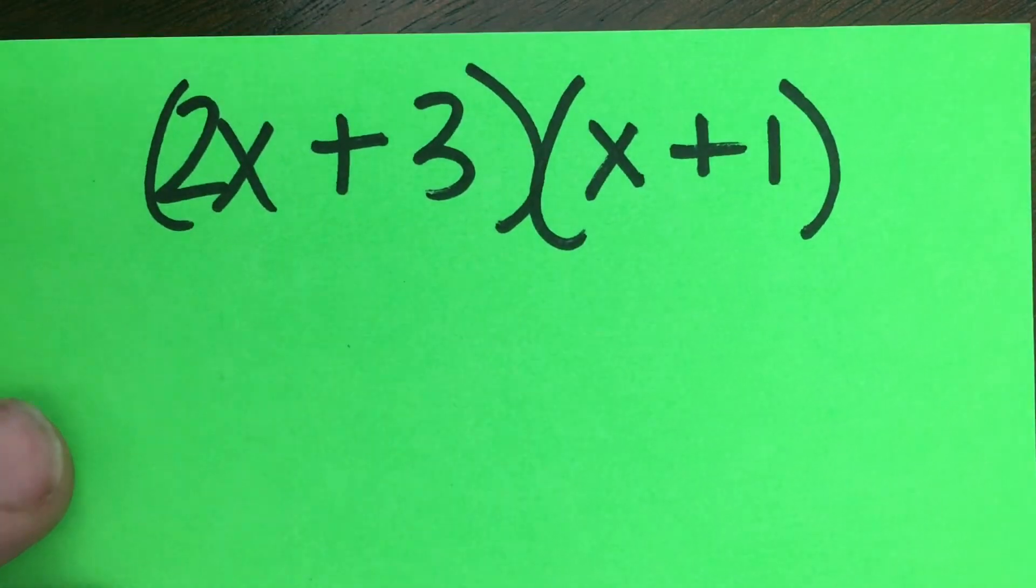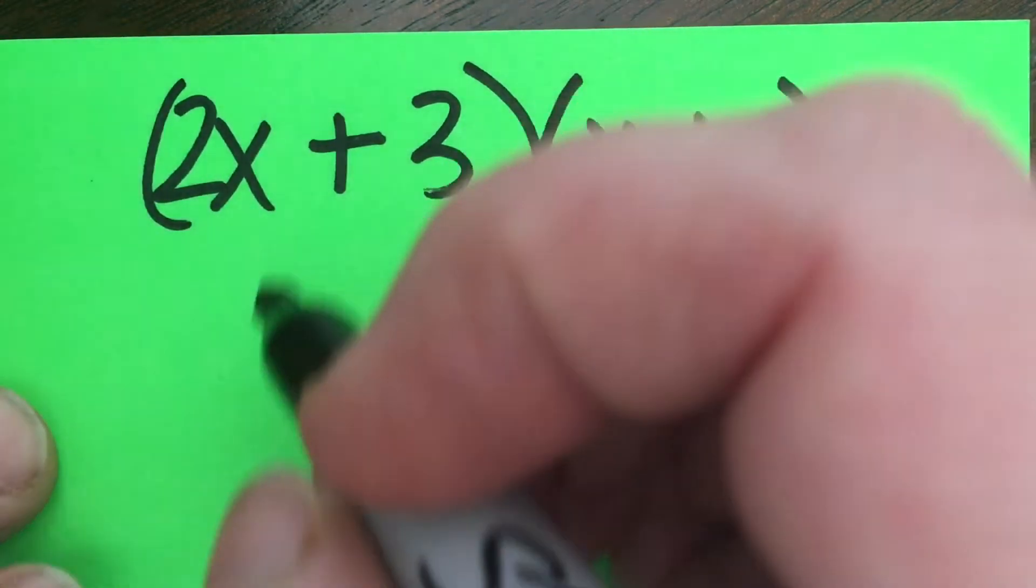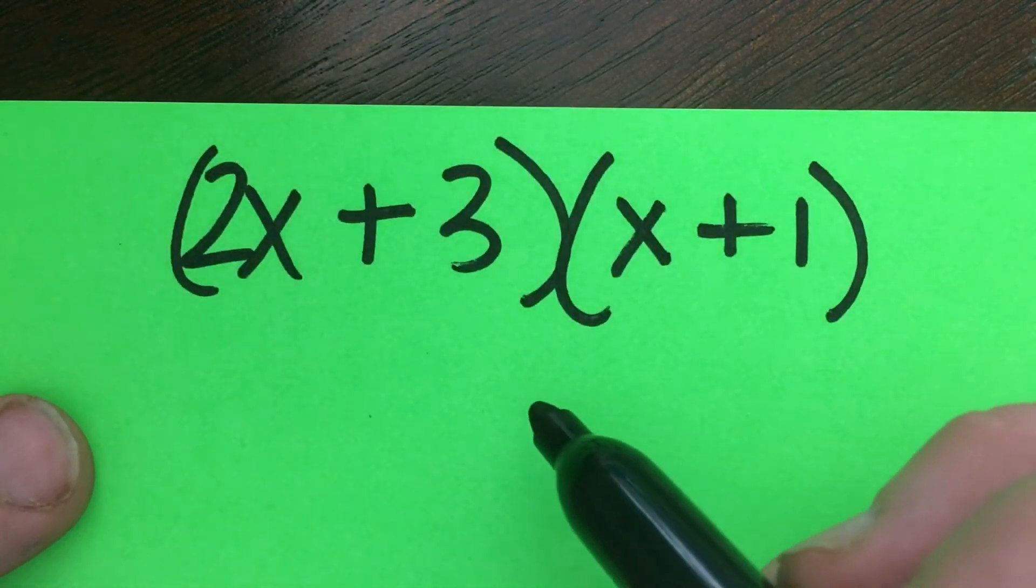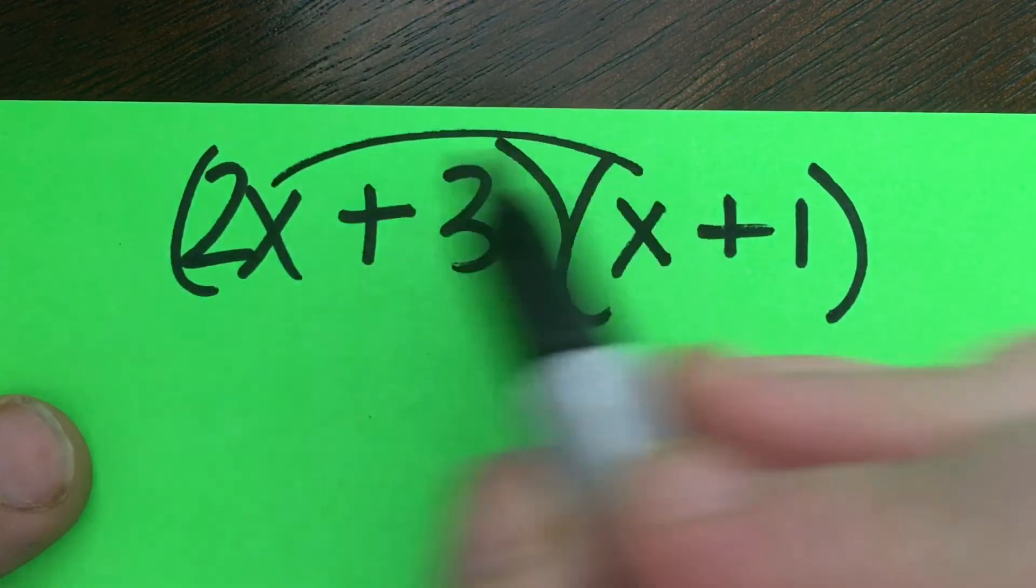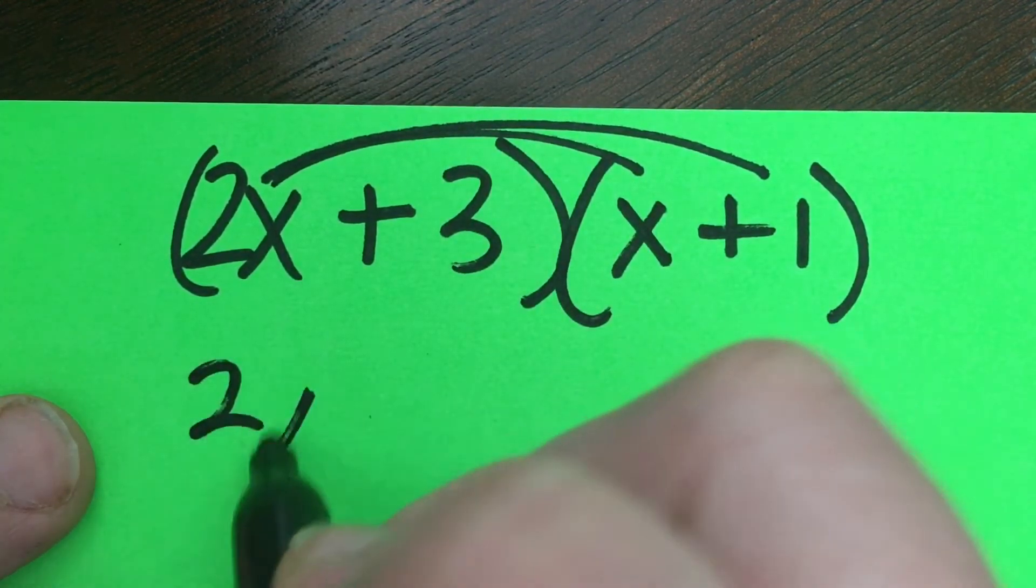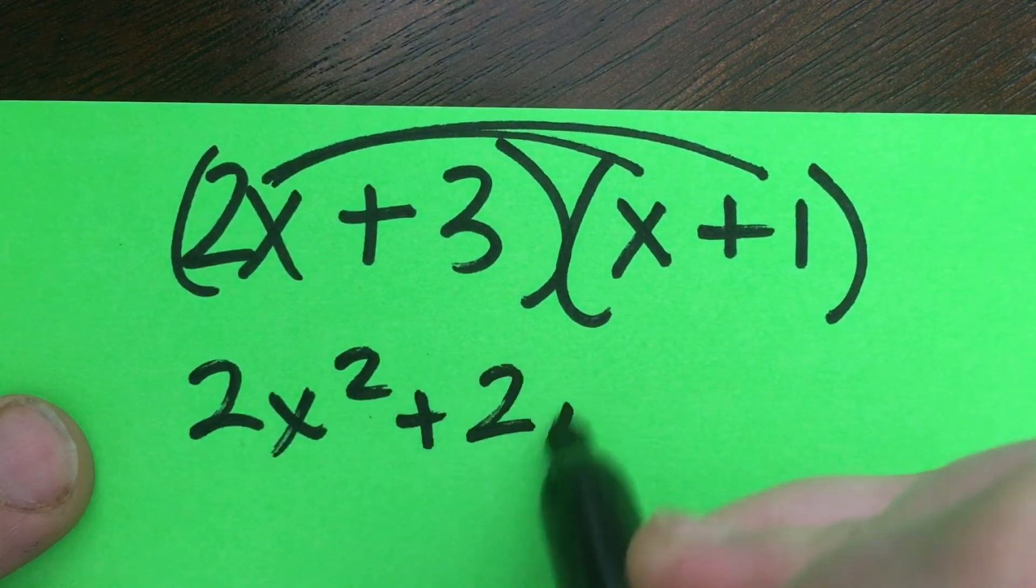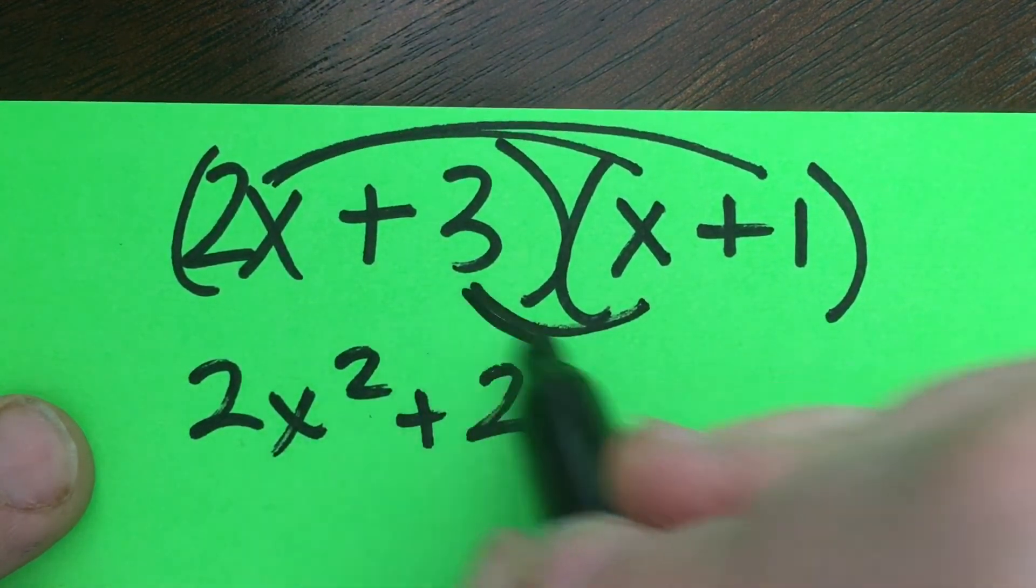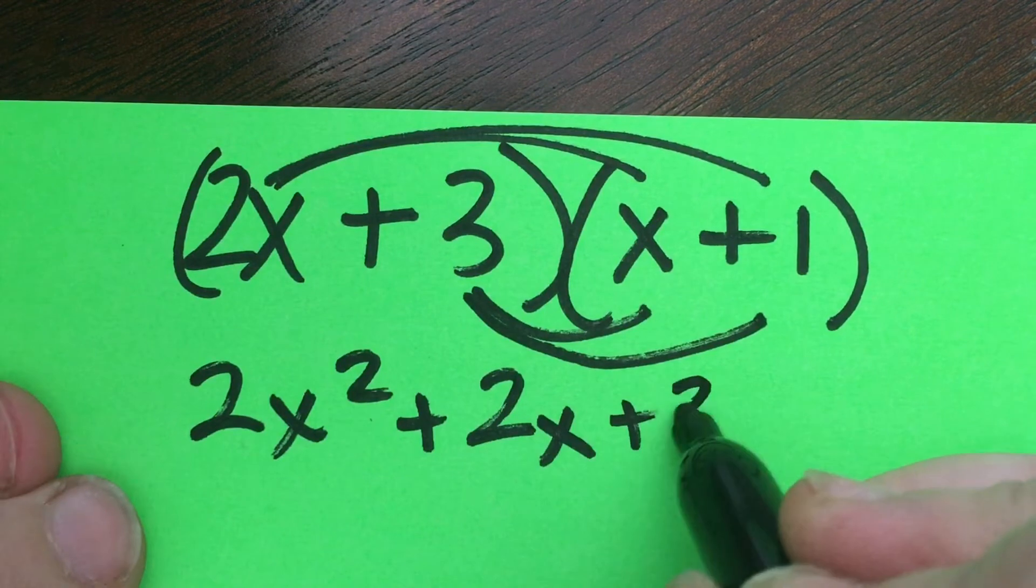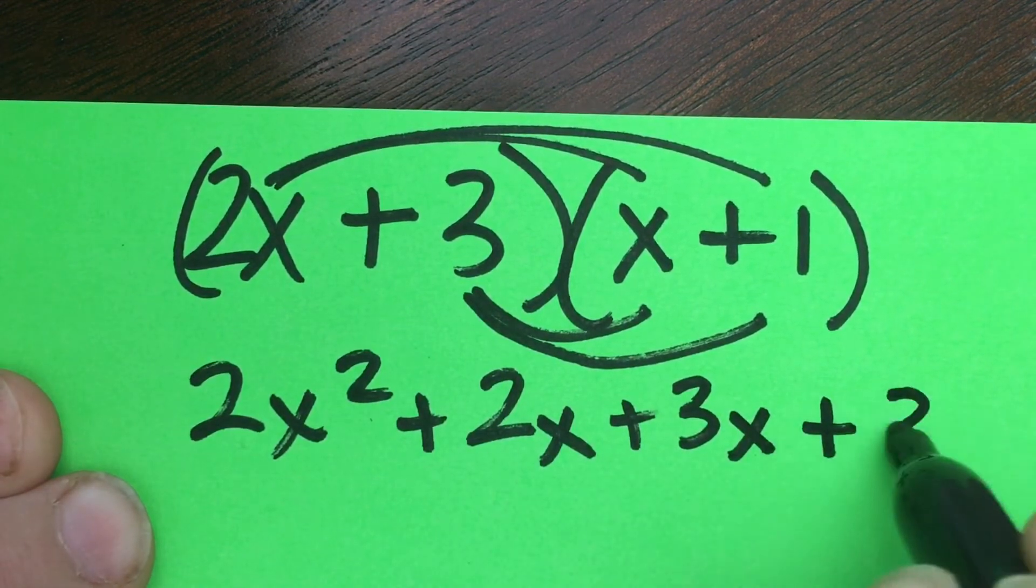And then here's another. Probably I would have done this one first because everything is positive, but that's okay. We've got 2x times x and 2x times 1. That gets me 2x squared plus 2x. I have 3 times x and 3 times 1. That gets me a positive 3x and a positive 3.